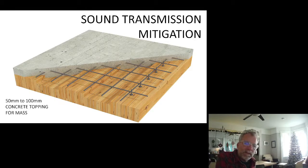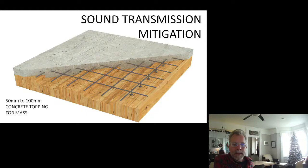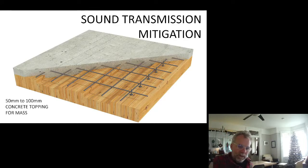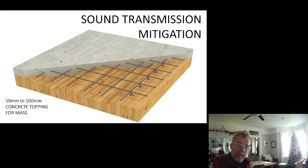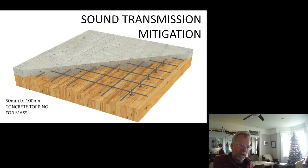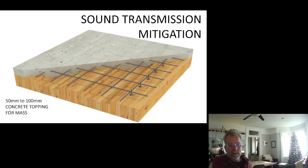We also have to be concerned with sound transmission — the noise that travels from one occupancy to another, like hearing conversations from the office or apartment above you. Mass is the most important thing for mitigating sound transmission. Wood is only 20% of the density of concrete — wood buildings are too light to effectively mitigate sound transmission. So we add mass; typically, if we're exposing the bottom and not putting in a ceiling, we're putting concrete on top.